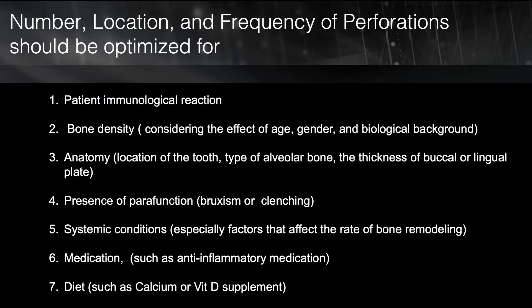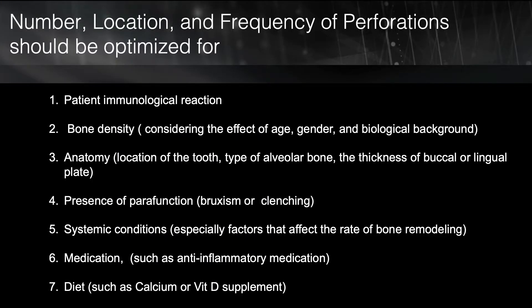To summarize our discussion today, it is very important that when we are applying macro osteoperforation, we pay attention to the differences between our patients. While in some patients a smaller number of perforations can increase the rate of tooth movement, other patients, based on their bone density, require a higher number of perforations. Also, the bone density around the tooth is not homogeneous — some people have higher density in certain areas. Therefore, the location of the perforation should be optimized based on the patient's anatomy. If we are planning to use this technique, we should apply it frequently, monitor the rate of tooth movement, and optimize all factors based on the patient's needs. We require an individualized protocol for each patient; we cannot use one technique that applies to all patients.